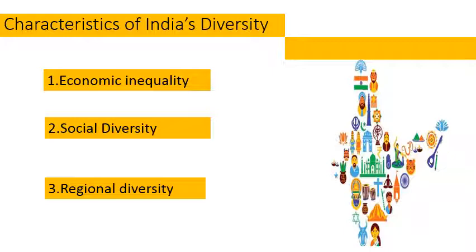Now we will move on to social diversity. India is a country with social differences — the caste system, which has existed in India for almost 2,000 years, has created several unequal divisions in society. There are hundreds of castes and sub-castes in India today, and people are identified according to the caste to which they belong. Apart from this, another example of social differences is the family system. Many of us live in large families consisting of grandparents, uncles, aunts and cousins — this is the joint family system. Some of us live only with our parents and siblings, which is known as a nuclear family.